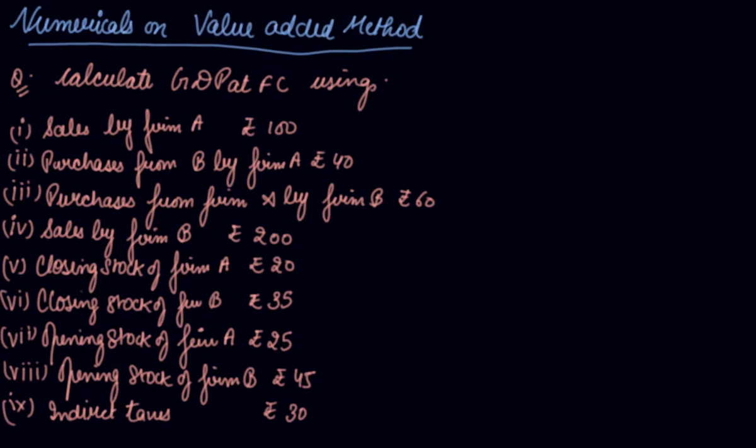In this video, we will be doing the numerical term value added method of national income. What was your formula of value added method was value added used to be calculated according to sales plus change in stock minus intermediate consumption.